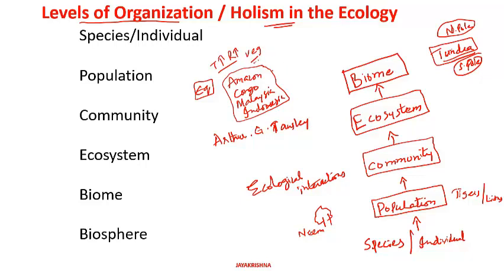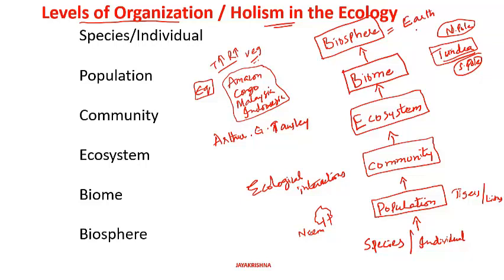Even the vegetation is also similar. Such a similar type of vegetation along with similar climatic conditions is called as biome. A group of such biomes — like equatorial biome, tundra biome — all put together is called as biosphere. The best example for the biosphere is the planet Earth.